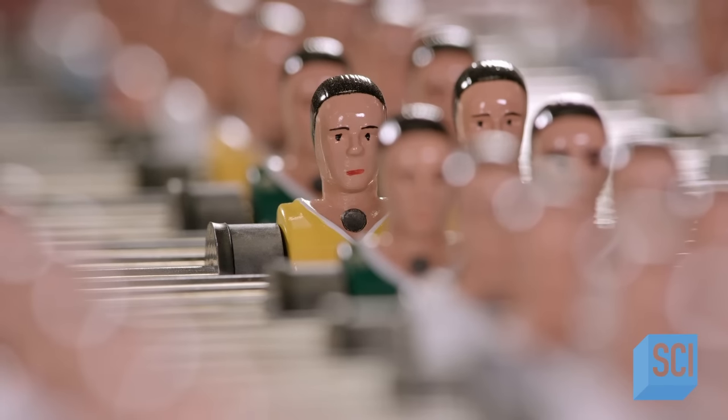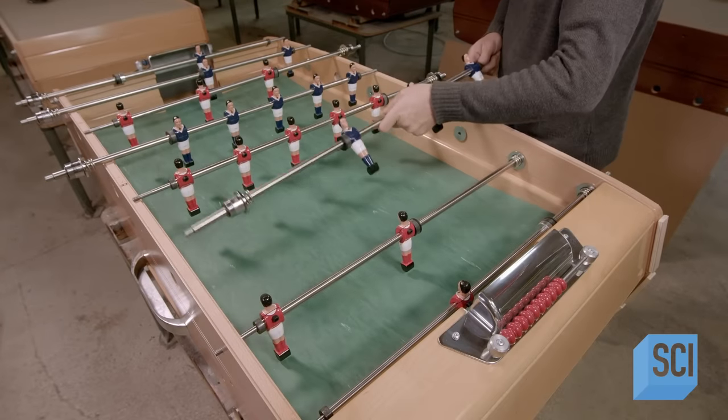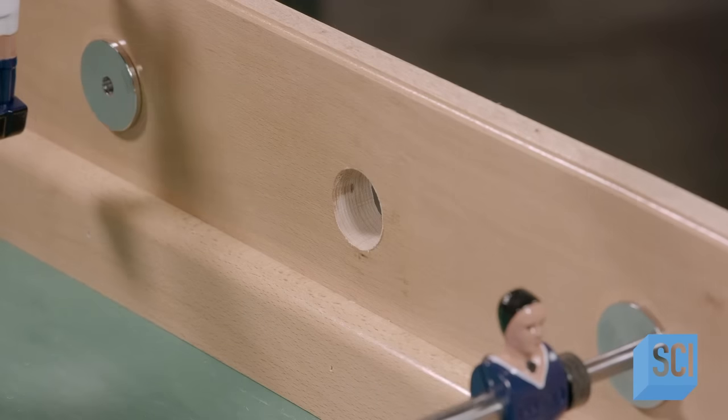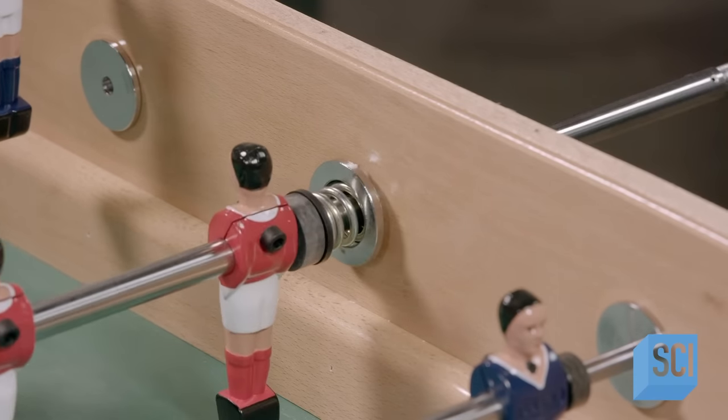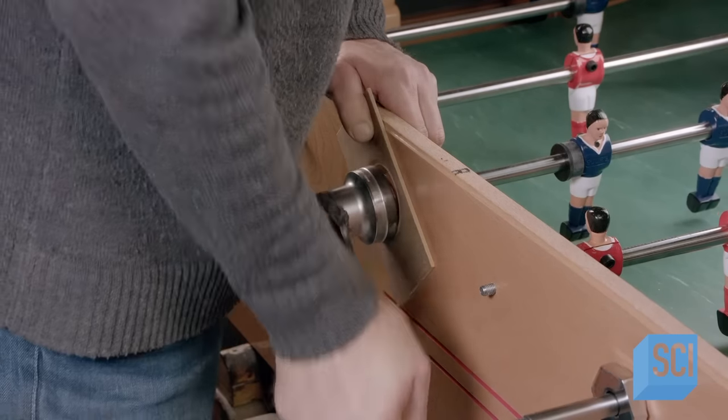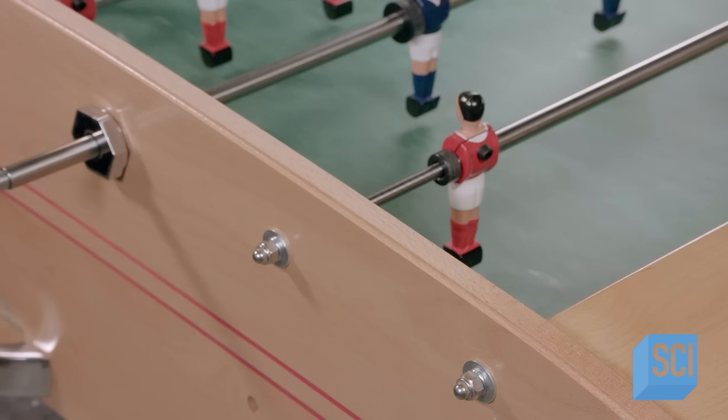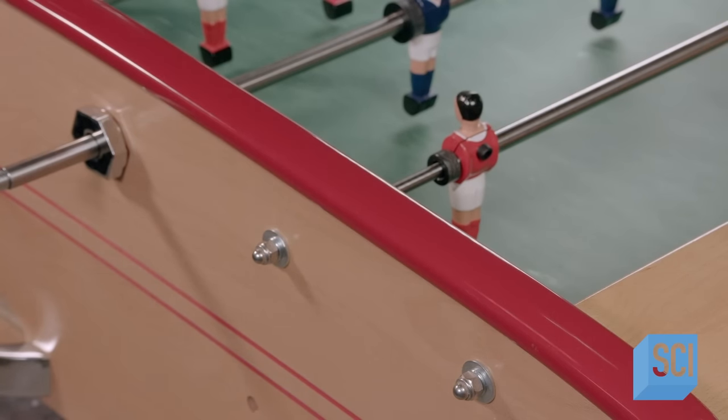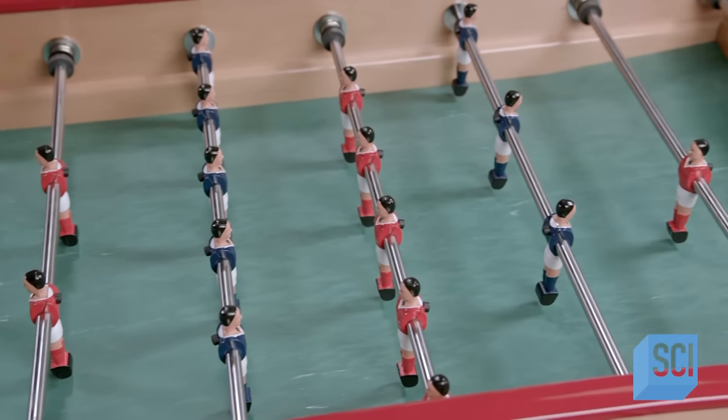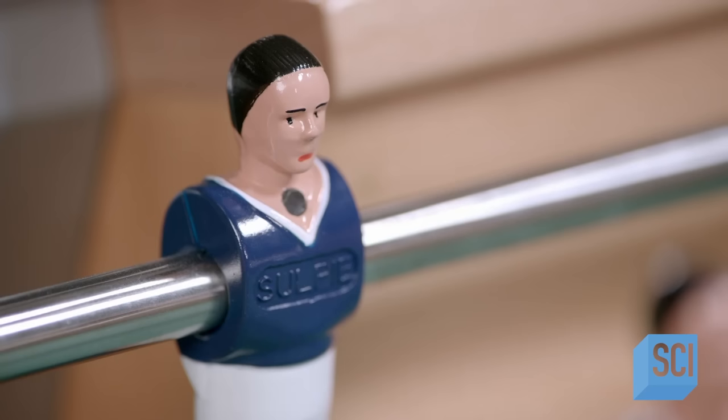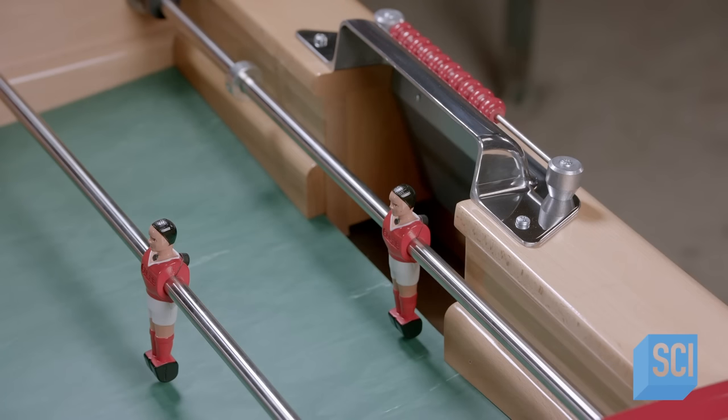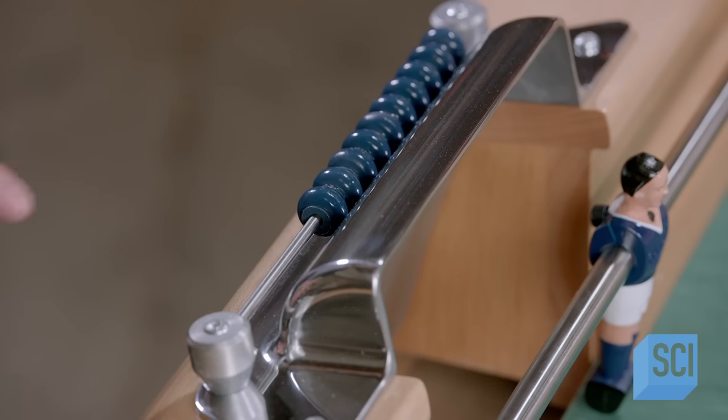After preparing eight rods of players, a worker installs them in the table. The telescoping handle end of the rod has a spring-loaded bearing that fits in a hole in the table. He secures it from the outside. After bolting the opposite end, workers protect the top edge of the table with a plastic trim. After threading plastic handles to the telescopic end of the rods, and mounting the tables on four sturdy solid wood legs, this foosball table is ready for kickoff.